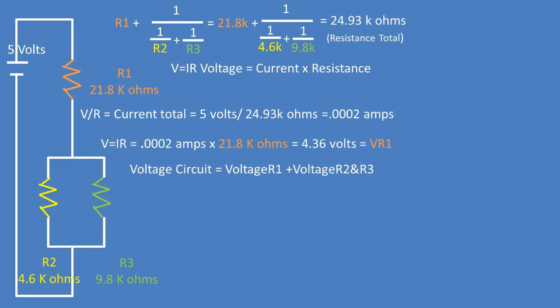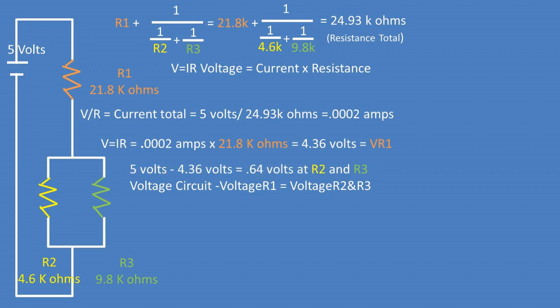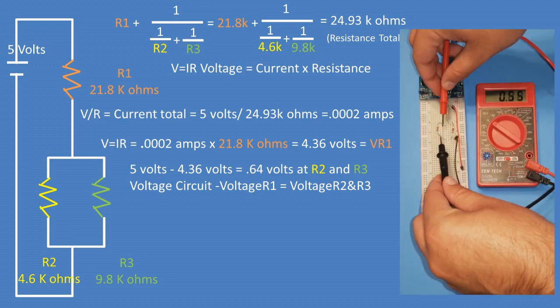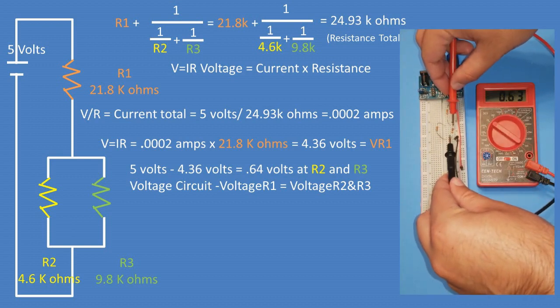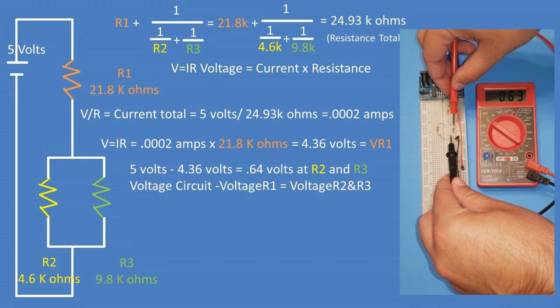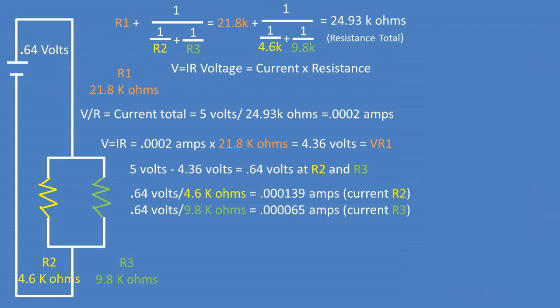So we can rearrange this to get the voltage of the circuit minus the voltage of R1 being equal to the voltage of resistor 2 and resistor 3. Plugging in our numbers, we get that 5 volts minus 4.36 volts is equal to the voltage at resistor 2 and resistor 3, which is 0.64 volts.